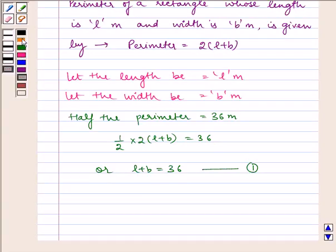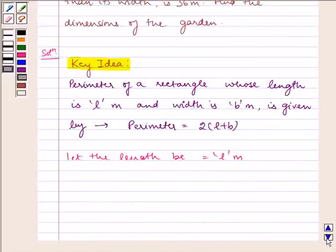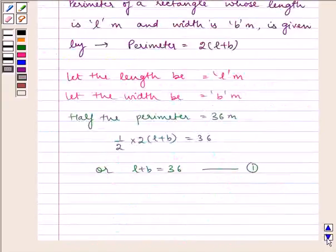Now, it is also given to us in the question that the length is 4 meter more than its width. Therefore, difference between length and width is 4 meter. We get L minus B equals 4, and this is our second equation.